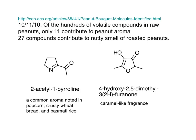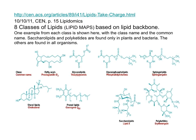These two compounds are found in raw peanuts and contribute to the aroma. Organic compounds are classified by functional groups. Biomolecules, which include lipids, proteins, carbohydrates, and nucleic acids, are also organic compounds.